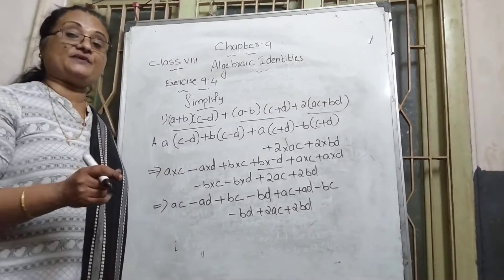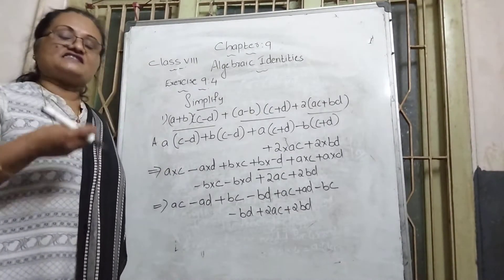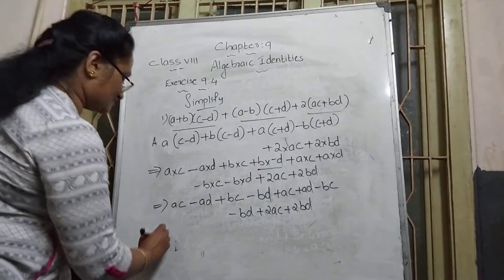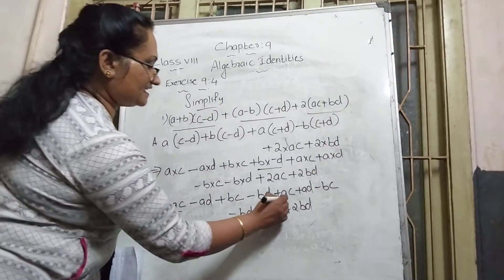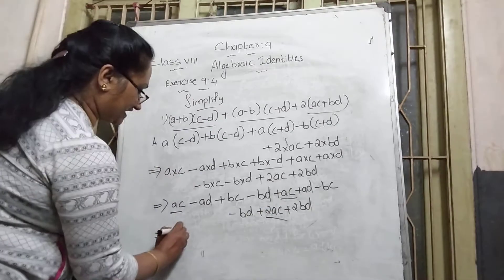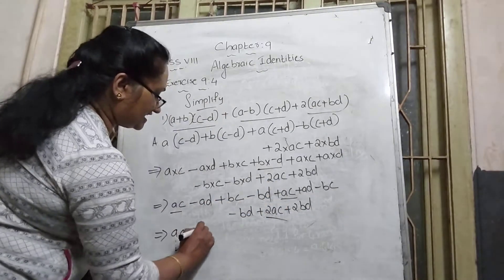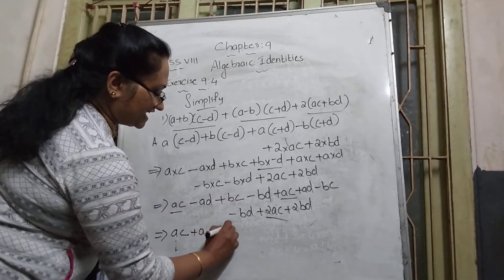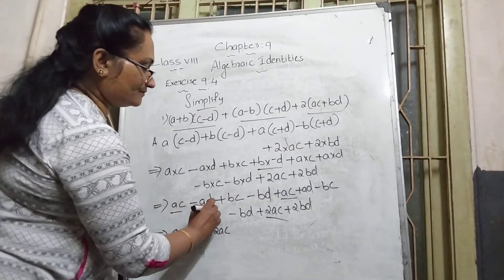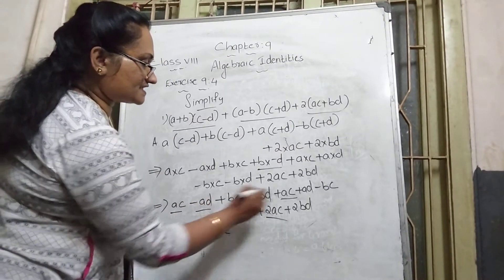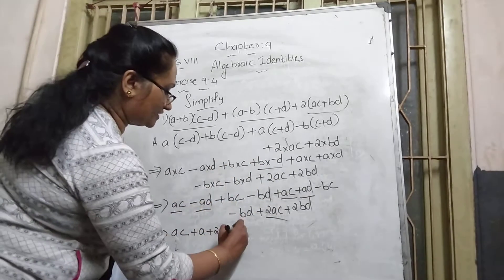Next step — collect the like terms. The like terms for ac are: ac, ac, and 2ac. For ad: we have −ad and +ad. Those are like terms. Coefficients — one is negative and one is positive.